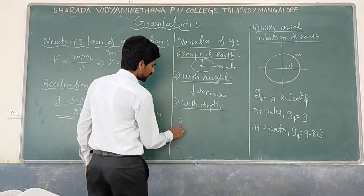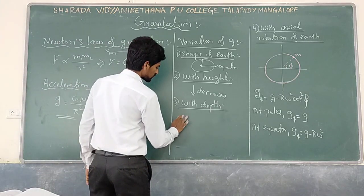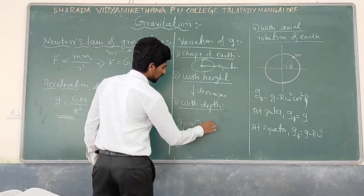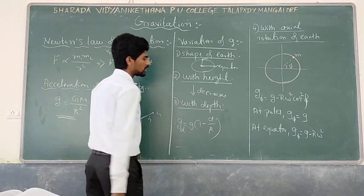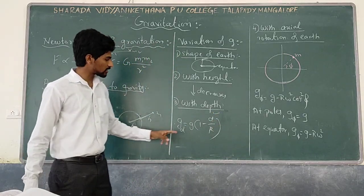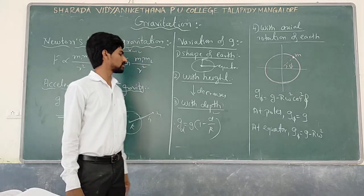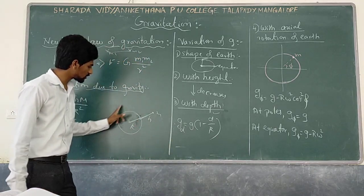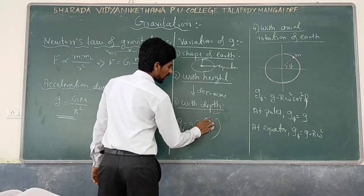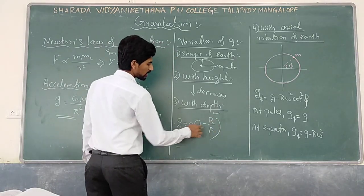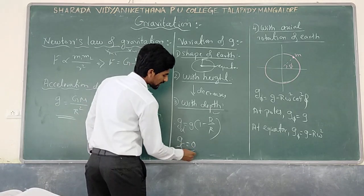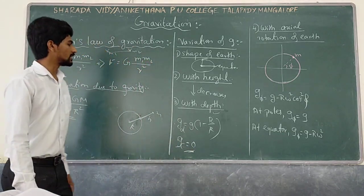If you calculate g with depth, you get the equation: g at depth d is equal to g into 1 minus d by R. Here d is the depth from the surface. So g decreases with depth as well. g will be highest on the surface of Earth. At the centre, d becomes R, so we get 1 minus 1, meaning acceleration due to gravity will be 0 at the centre.